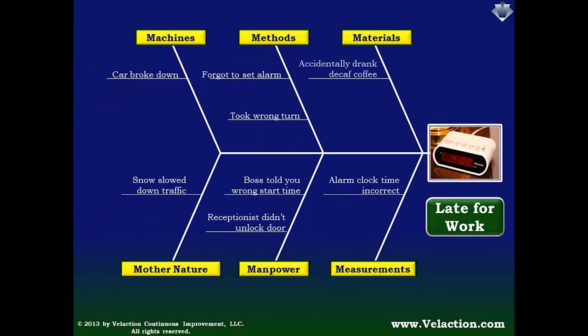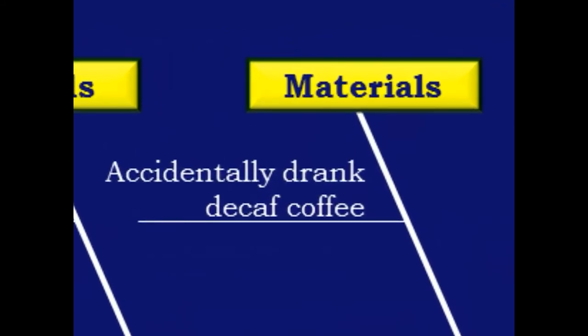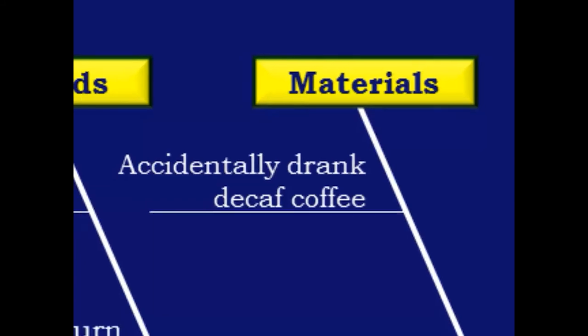This final category, materials, is most common in shop floor cause and effect diagrams. But it does occasionally show up in other areas. In this late-to-work example, getting the low-octane coffee can be a problem.